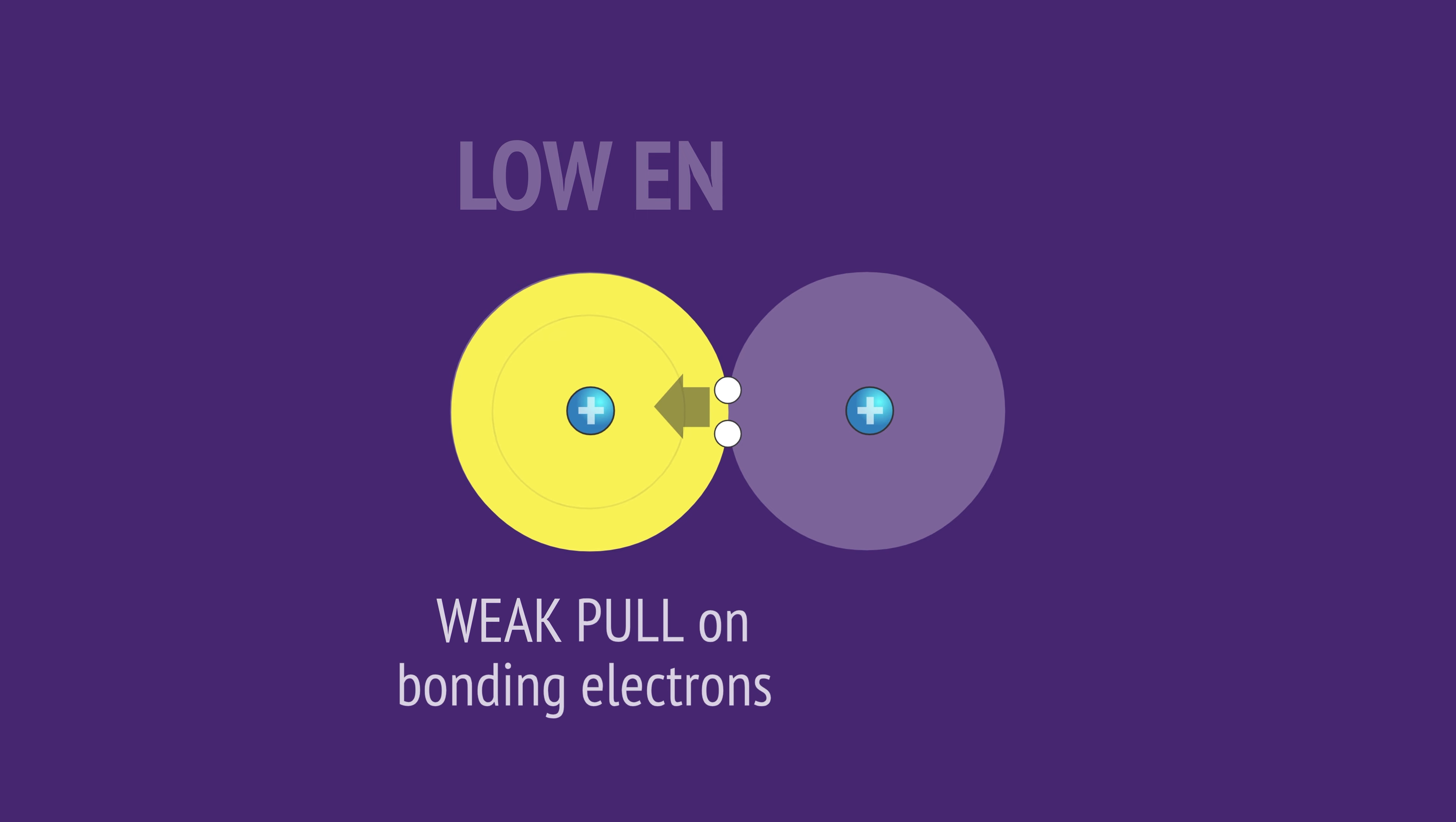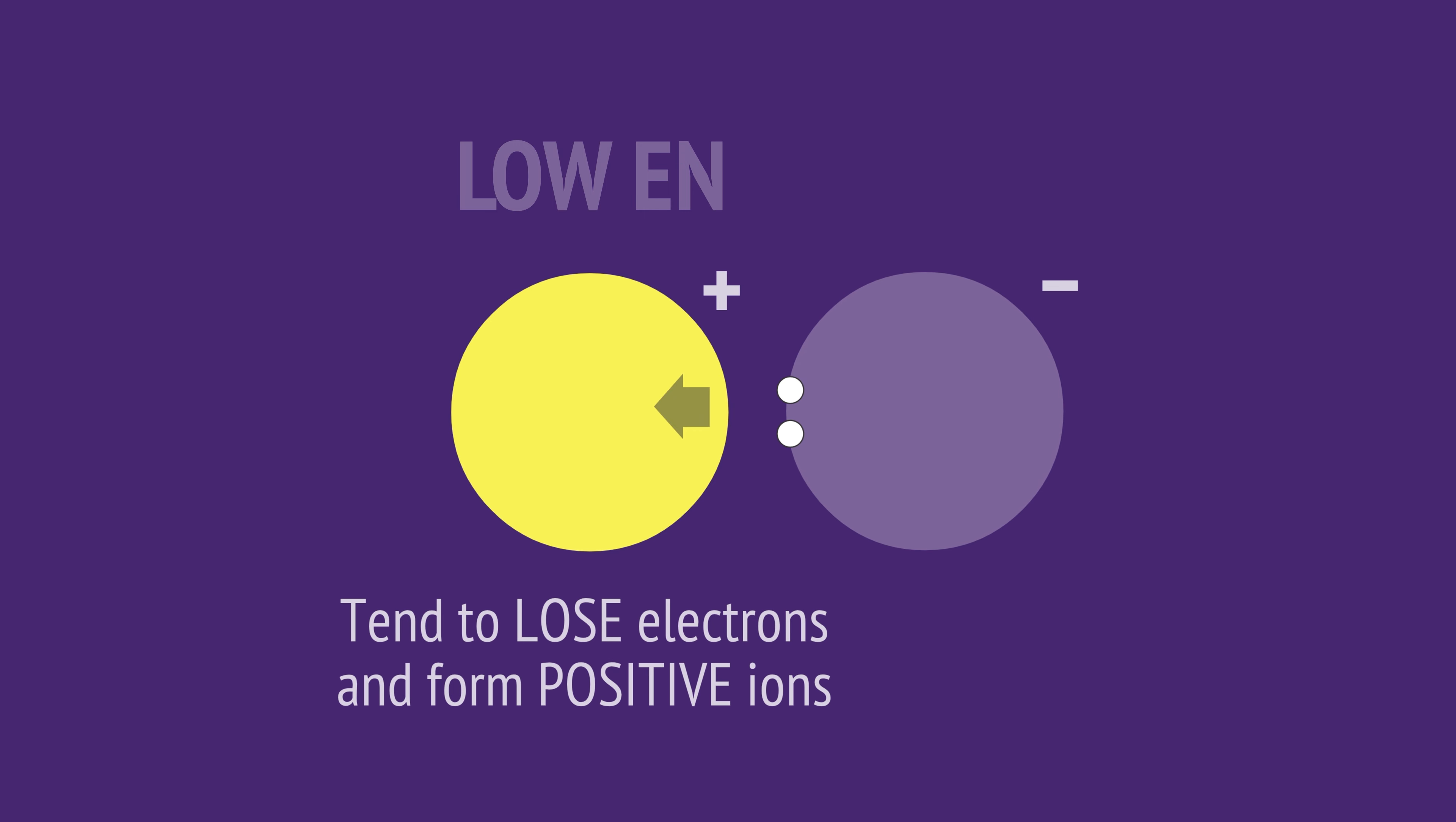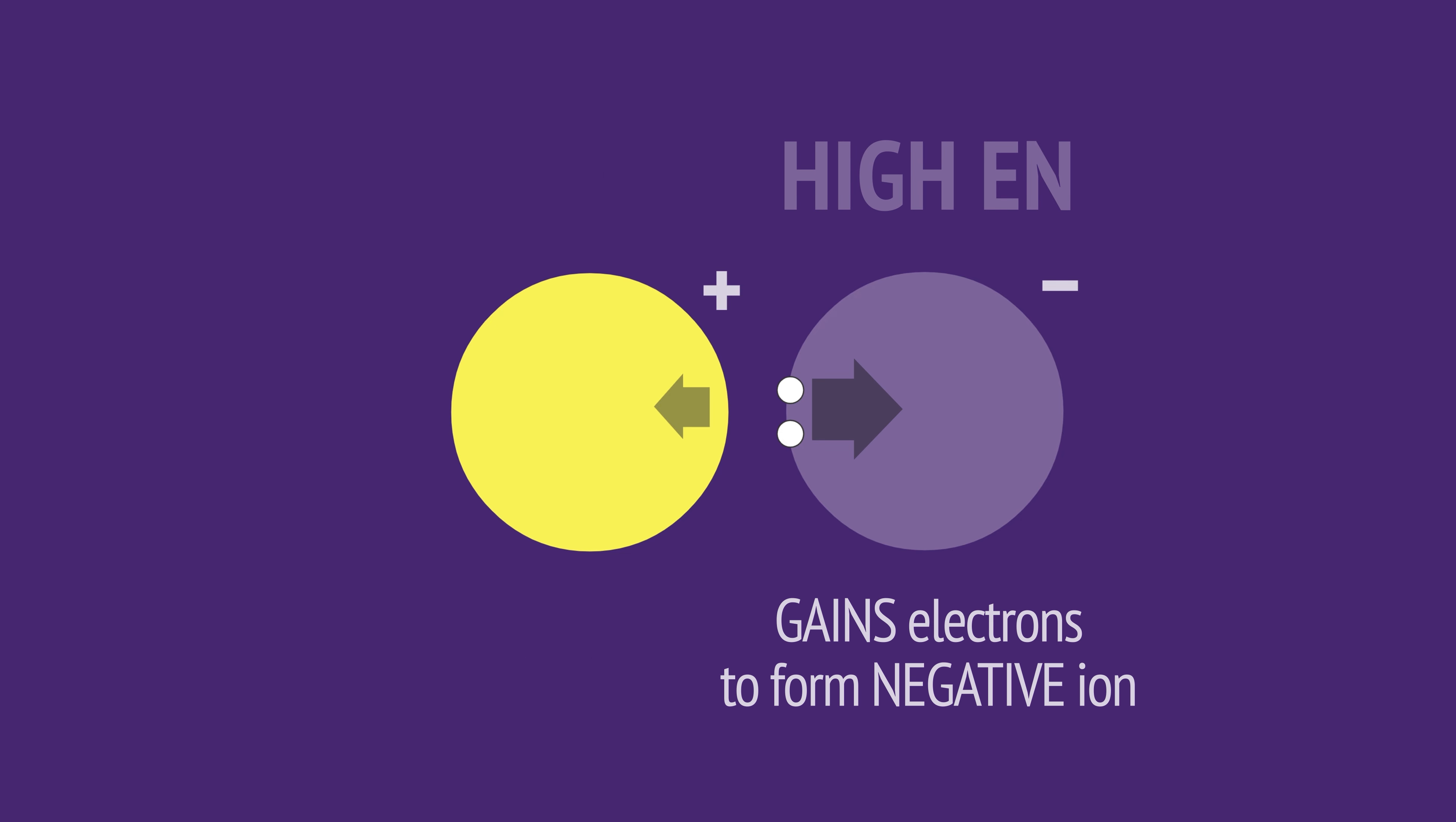Atoms with low electronegativity tend to lose electrons to atoms with higher electronegativity. As they do, they form positive ions, while the atom with the high electronegativity forms a negative ion.